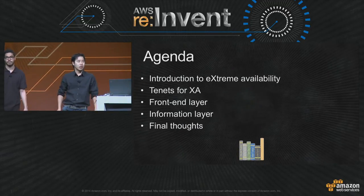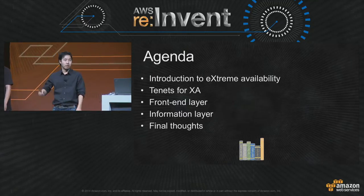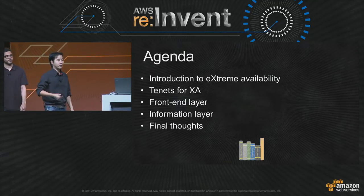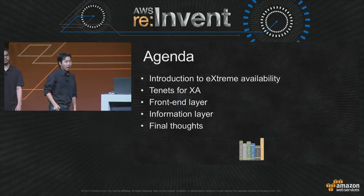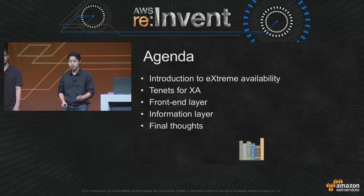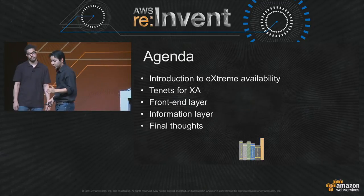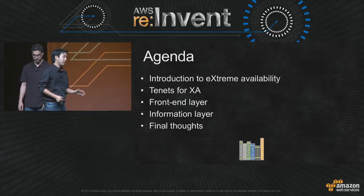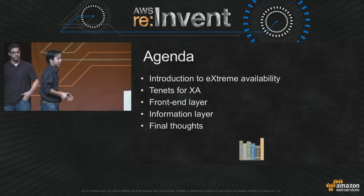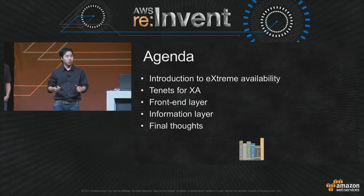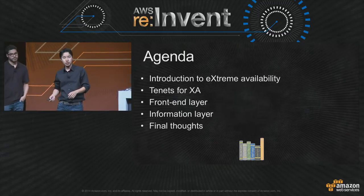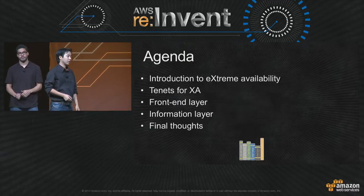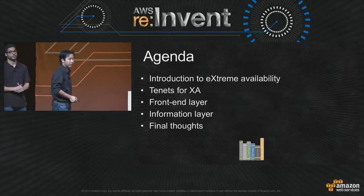Let's quickly walk through the agenda for today. First, I'm going to introduce the concept of extreme availability and why you should consider it. Then I'm going to present some basic tenets for you to start achieving XA. Then we're going to dive a bit deeper into each of the most common application layers and how you can achieve XA on them. And finally, we're going to close with some final thoughts.